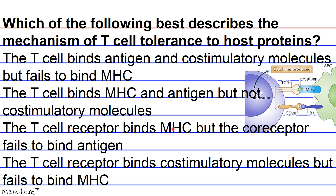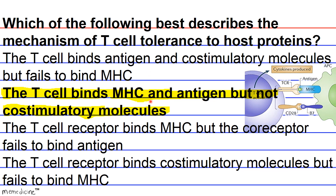The correct answer is B. Signal 1 provides specificity: when the T-cell receptor binds MHC and the co-receptor binds the antigen, the T-cell adequately recognizes the antigen. Signal 2 results from T-cell binding of co-stimulatory molecules, but if the antigen comes from a host cell, the T-cell will not bind the co-stimulatory molecule and will not be activated. A major clue is given in the last sentence of paragraph 3. Therefore, the T-cell binds MHC and antigen but not co-stimulatory molecules.